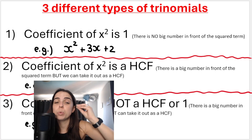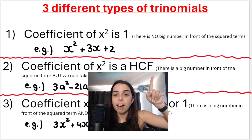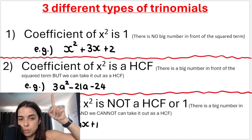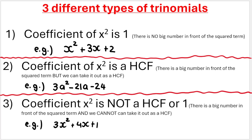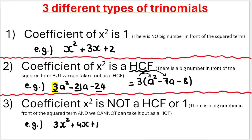The second type of trinomial is when the coefficient of x squared, or the squared term, is a highest common factor. There's a big number in front of the squared term, but we can take it out as an HCF. In the second example, you can see there is a three in front of the squared term. But if you are asked to factorize this expression, you always need to try highest common factor first. Three can divide into three, three can divide into 21, and three can divide into 24, so we can take three out as a highest common factor. Then we're left with a² minus 7a minus 8. Remember, you always distribute or multiply the three back in to check. This creates a trinomial exactly like the first type, where the coefficient of the squared term is an invisible one. Just take out the HCF and then do normal trinomials.